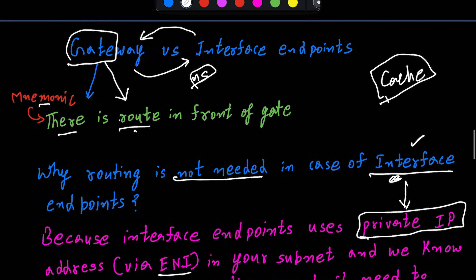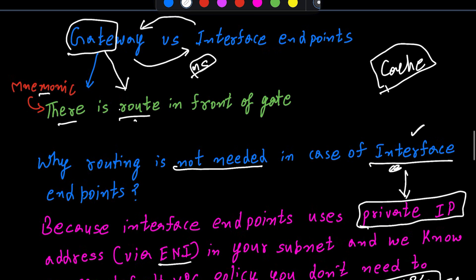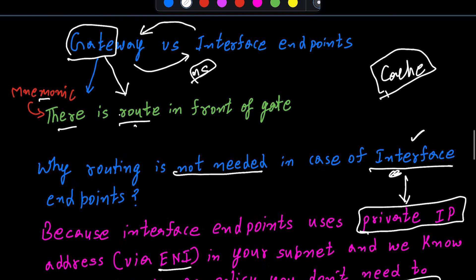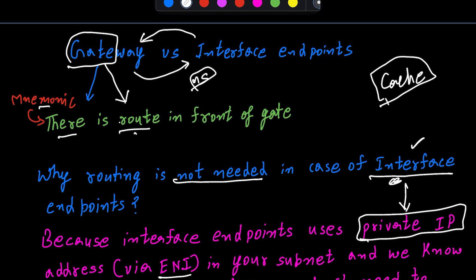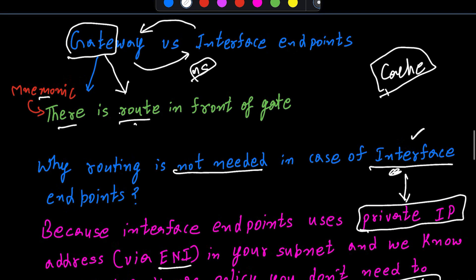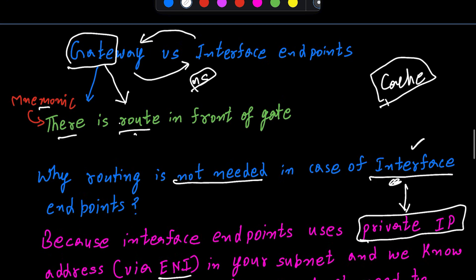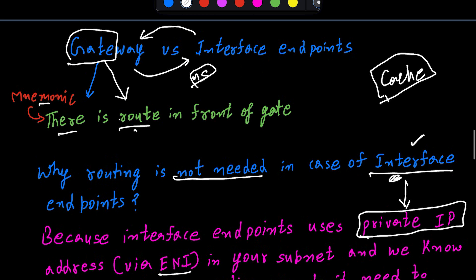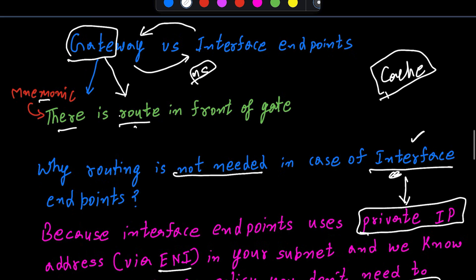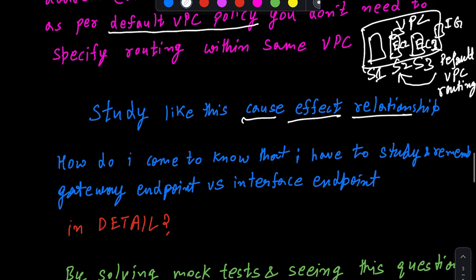Without this mnemonic technique and clear conceptual understanding, you may forget the exact differences between gateway and interface endpoints. Your mind will remember details — in one, routing is used; in the other, a private IP is allotted via ENI; one is for S3 and DynamoDB, the other is for other resources. But the attachment that routing is related to gateway can only be made if you have a starting point like this mnemonic in your mind.